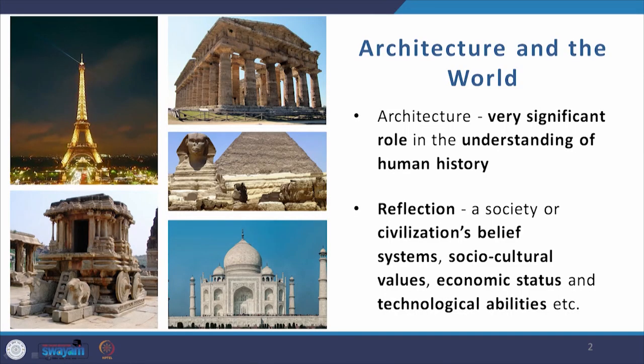For example, if we just look at the pyramids or the temples, that speaks a lot about what the people believed in or the value systems they had during that time. Similarly, if we look at the architecture of today, modern architecture is a testament to a modern world, and modern Indian architecture is a reflection of what modern India is — just as in the past, architecture was a reflection of those people.